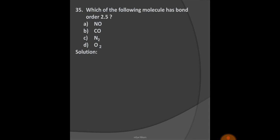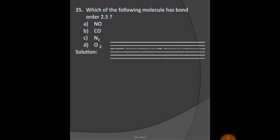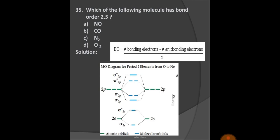Next question: Which of the following molecules has bond order 2.5? Options: A) NO, B) CO, C) N2, D) O2. Bond order is calculated by using the formula: bond order equals bonding electrons minus anti-bonding electrons divided by two. When atomic orbitals combine to form molecular orbitals, then the energy level diagram should be like that. We have to fill all the electrons in the molecule according to that, according to this energy level, and calculate the bond order using this formula.